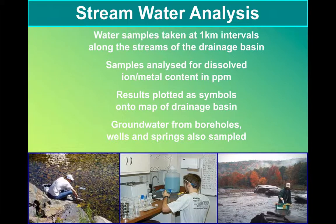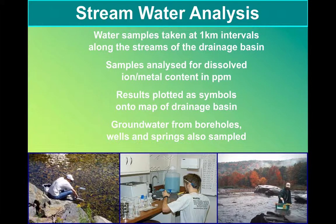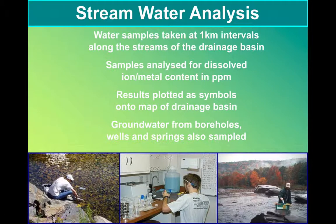If we look at stream water first, this is a fairly straightforward technique. It's one where lots of samples can be taken in a relatively short time, perhaps by systematically sampling river water at one kilometre intervals across a whole drainage basin. These samples are then analysed to look at any minerals that may be dissolved within that water. This can be mapped and that may help us narrow down the location of an ore body as this water passes over rocks containing the minerals that we're interested in.